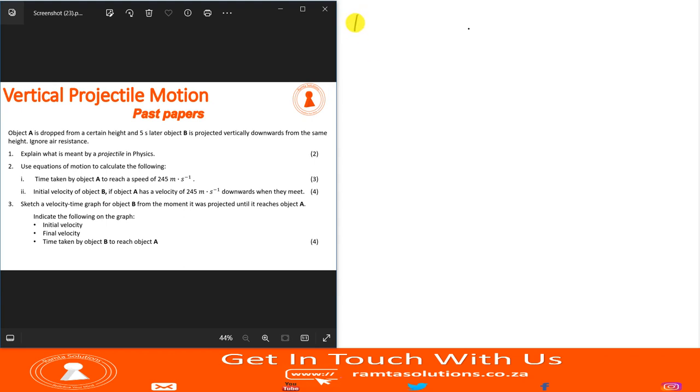So the information given here is this. For object A, its initial velocity is zero. For object B, its initial velocity is not zero, and it was projected five seconds after object A.